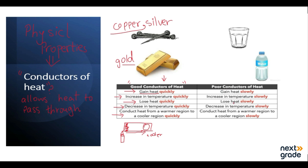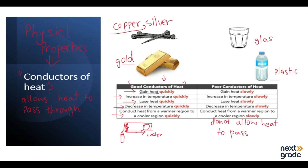We have another type of conductor called poor or bad conductors of heat. They do not allow heat to pass through them, meaning heat doesn't transfer. Examples include plastic, glass, and rubber.